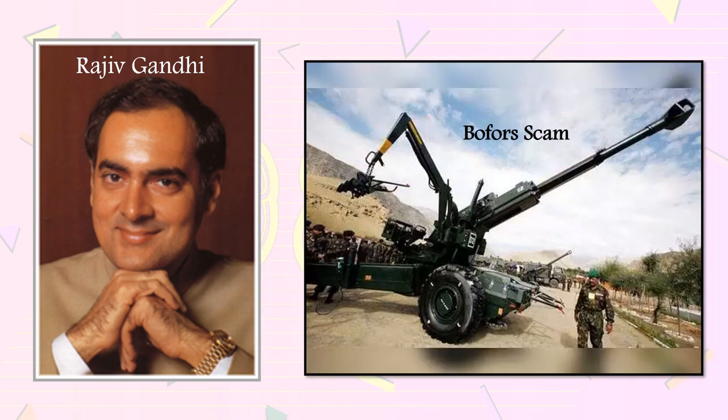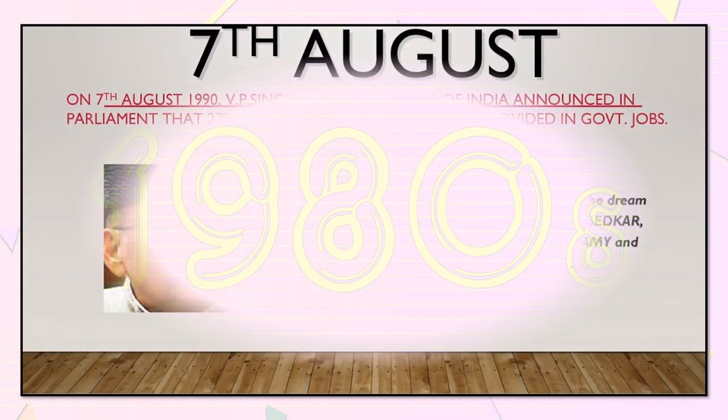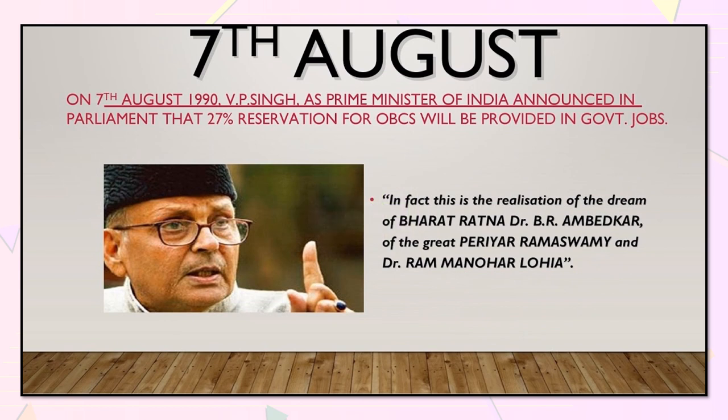The corruption scam which led to the fall of the Rajiv Gandhi-led Congress government in 1989 related to alleged kickbacks in the 1,437 crore Howitzer gun deal signed in 1986 with Swedish arms manufacturer Bofors. It was alleged that the Swedish company paid nearly 64 crore as a bribe to politicians, Congress leaders and bureaucrats. Former Prime Minister Rajiv Gandhi was also implicated in the case. The Bofors scandal was a major issue highlighted in the subsequent elections, which led to the Congress losing power. Several political parties formed a coalition called Janata Dal and Vishwanath Pratap Singh became the 7th Prime Minister of India.